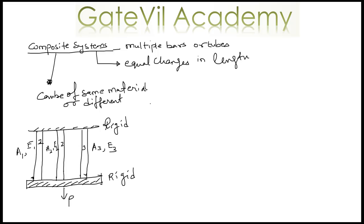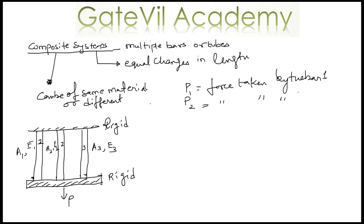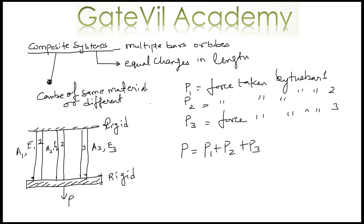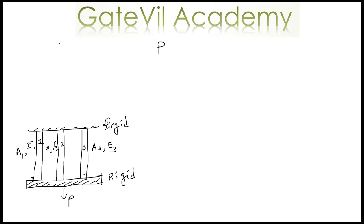Bar three will have A3 and E3. Now let's assume that a load P is being applied to the system of these three bars. Let P1 be the force taken by bar one, P2 the force taken by bar two, and P3 the force taken by bar three. From force equilibrium, P will be equal to P1 plus P2 plus P3.